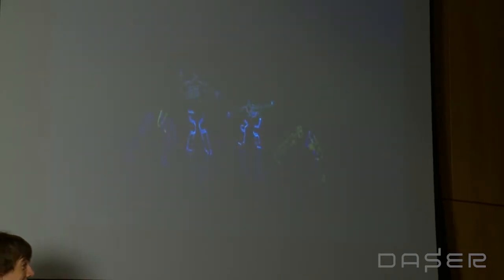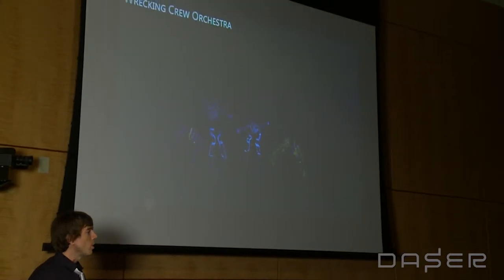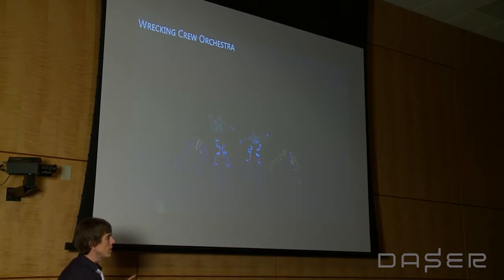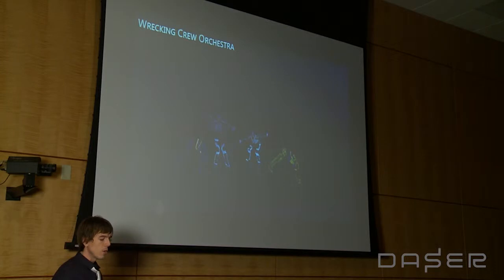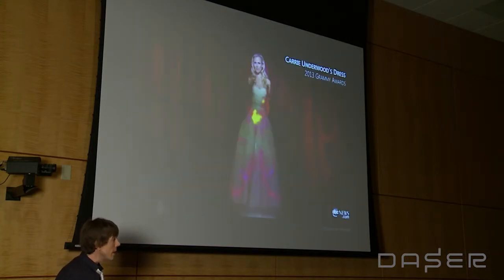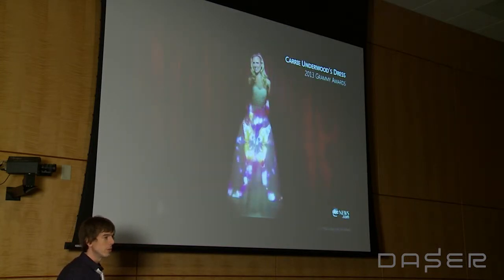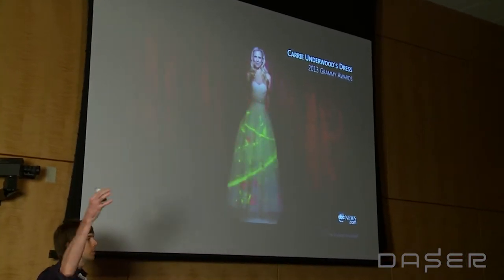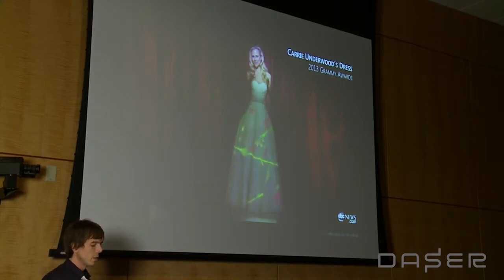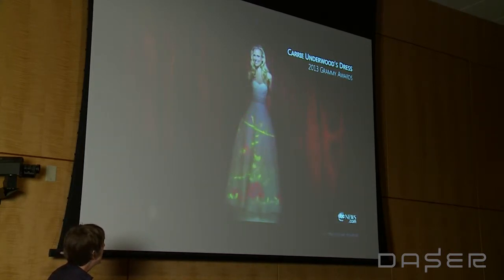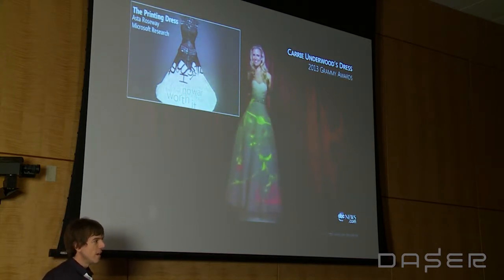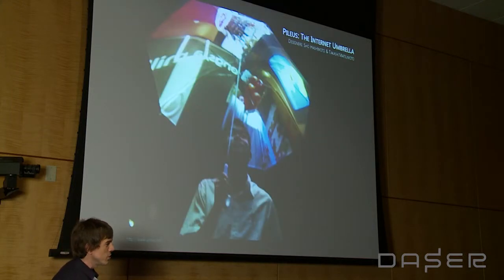That's incredibly exciting — mixing performance art with computation. Here we have electroluminescent wire, EL wire, with carefully timed on-and-off sequences that go along with body movement and very careful choreography. Here's another example: this is from the Grammy Awards in 2013. This isn't an e-textile specifically because the display is being projected from a mounted projector. However, some people are looking at building internally projected dresses, like Astro Roseway at Microsoft Research.